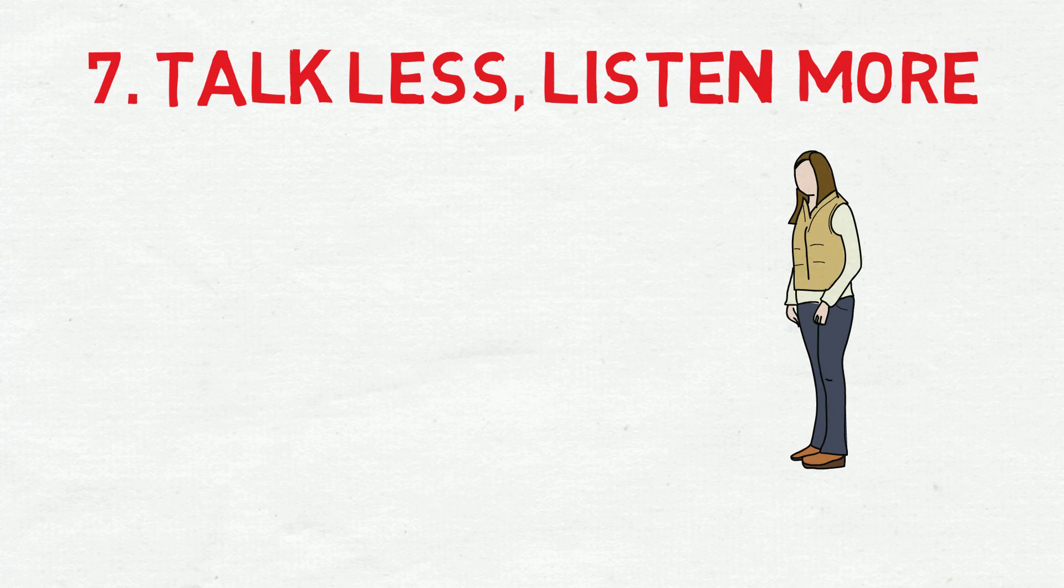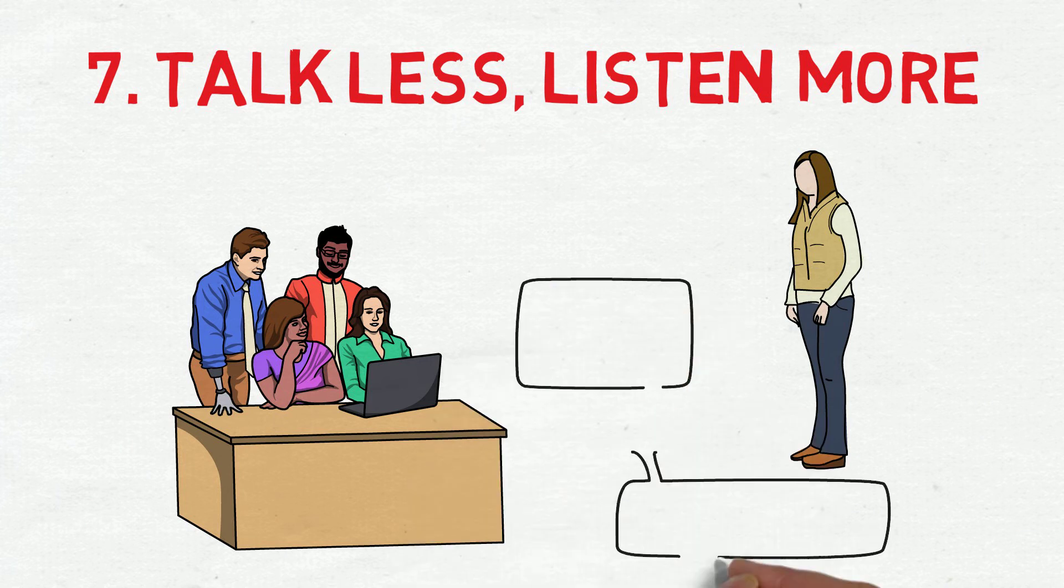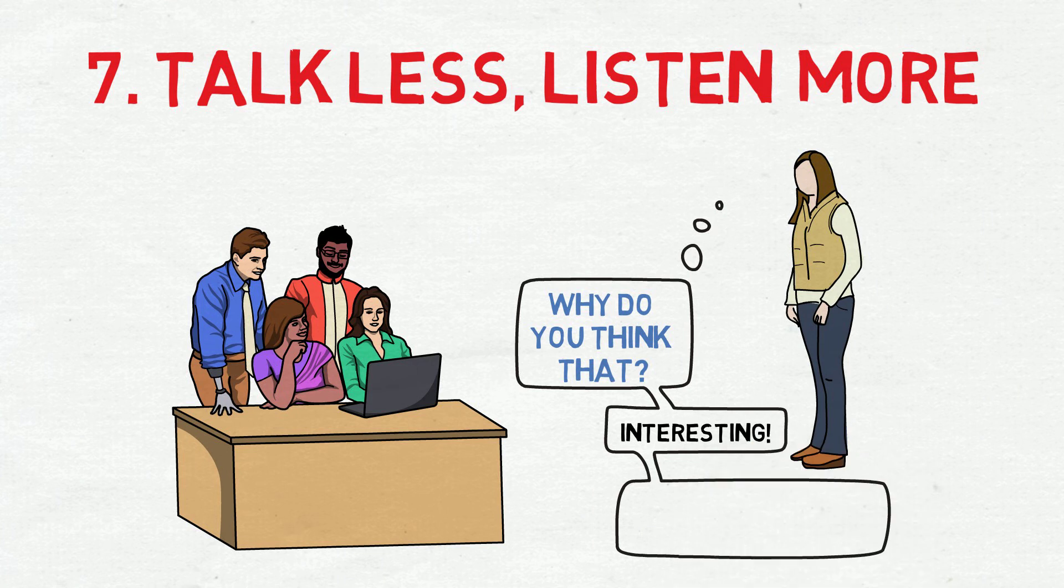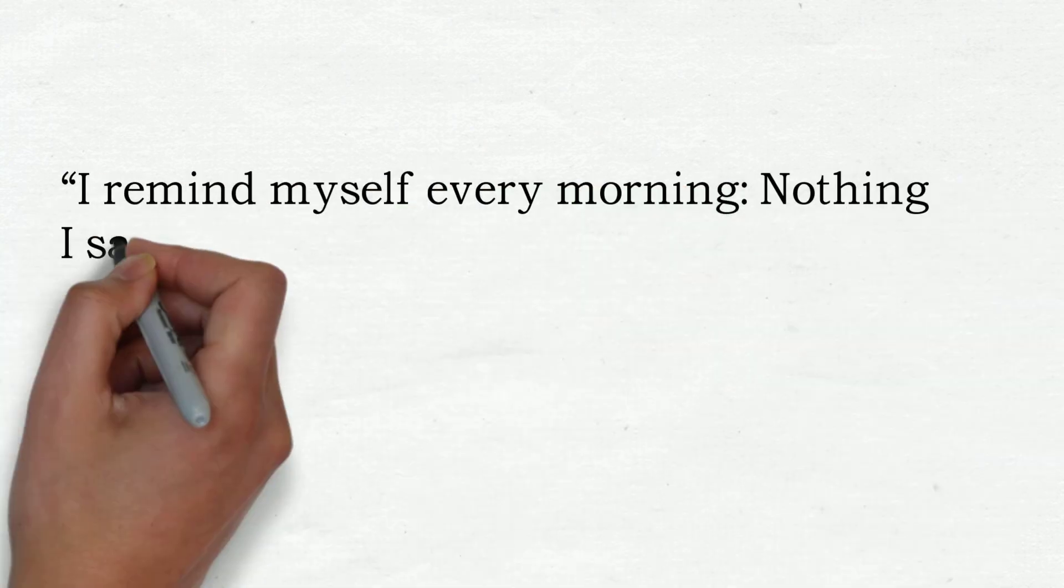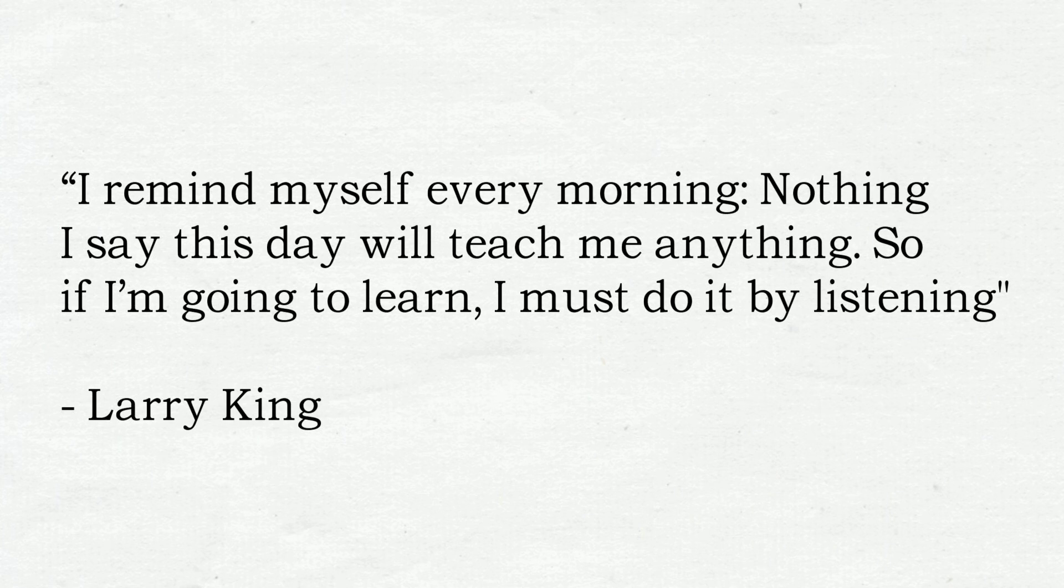Number seven, successful people talk less and listen more. Smart people almost always are good listeners. It is part of how they determine who to spend time with. They want to hear your ideas so they can learn from smart people around them. They can also leave pointless conversations or not get involved with them if they are listening. Famous TV host Larry King was quoted, I remind myself of this every morning. Nothing I say this day will teach me anything. So, if I'm going to learn, I must do it by listening.